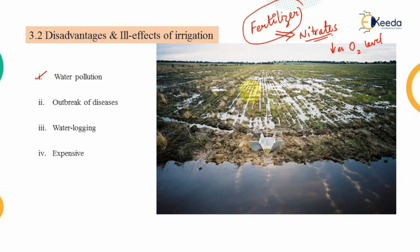Whenever we irrigate a field, it causes damp conditions, creating a marshy area as shown in the picture. That marshy area may be a home to a number of diseases — for example dengue or malaria — because it becomes a breeding ground for mosquitoes. So there are chances of an outbreak of diseases because of over-irrigation.